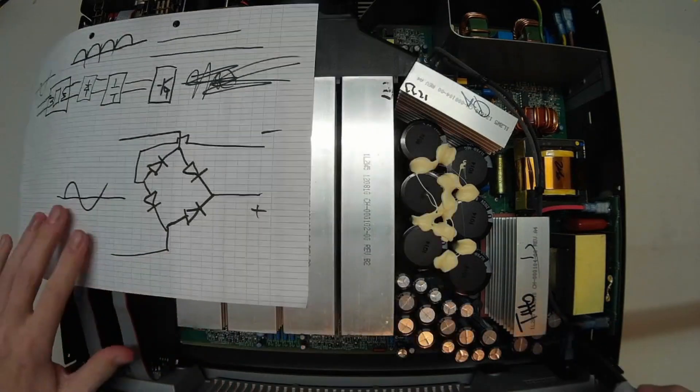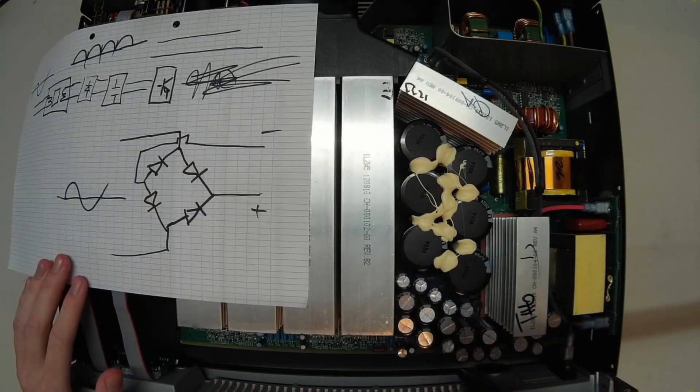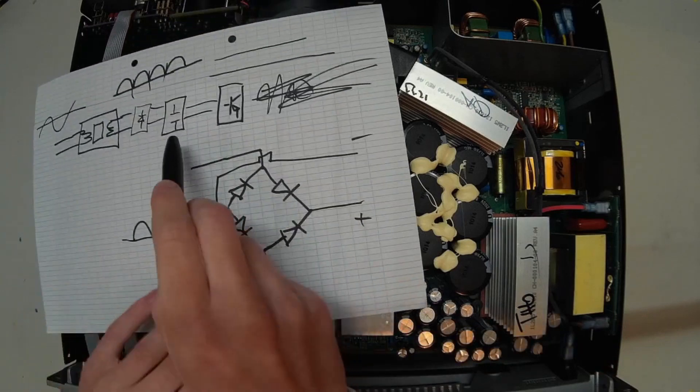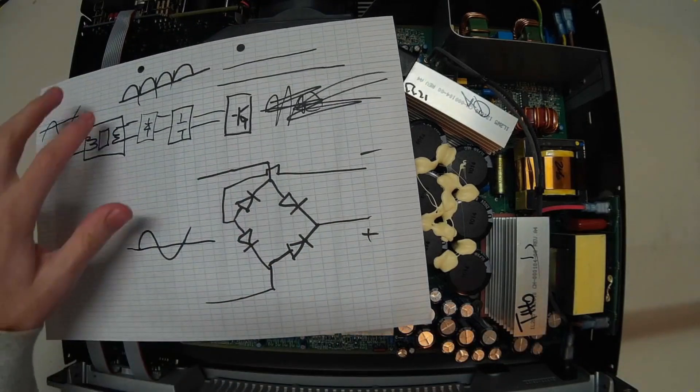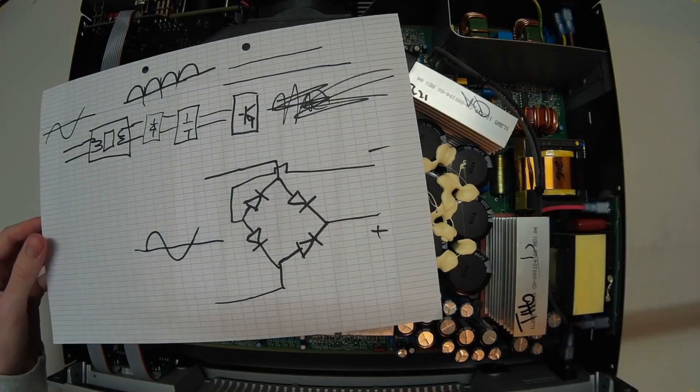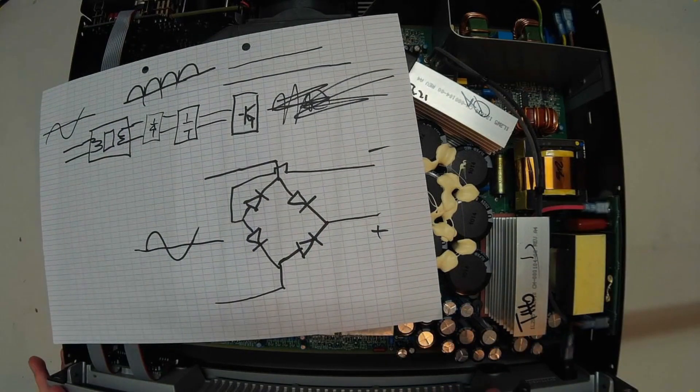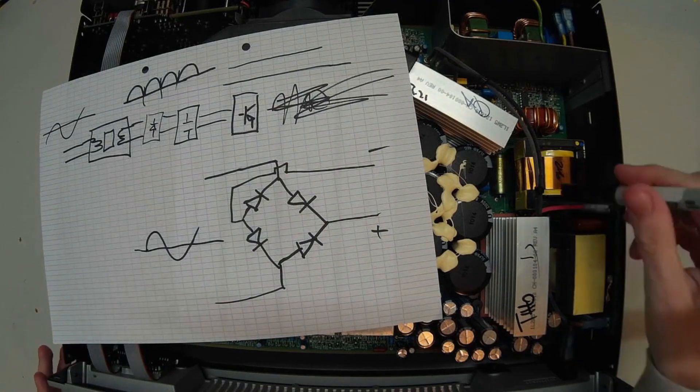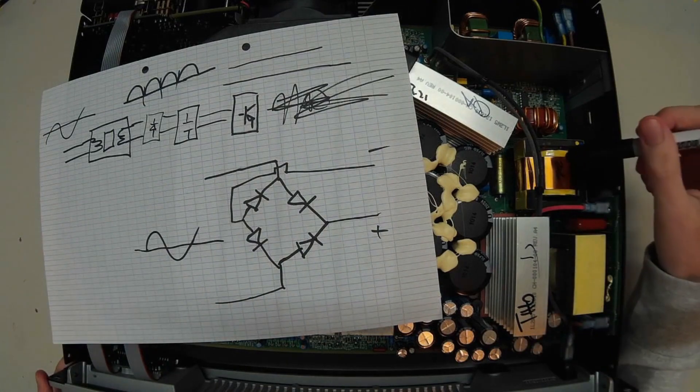And this section here is the capacitor bank, which is this part of the amplifier. But we don't have this huge transformer.